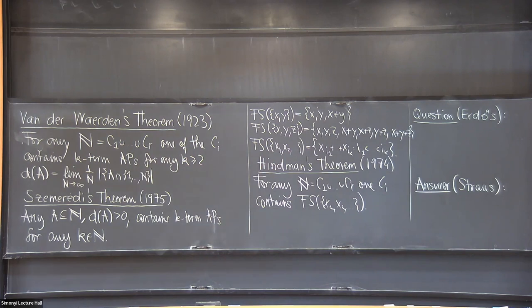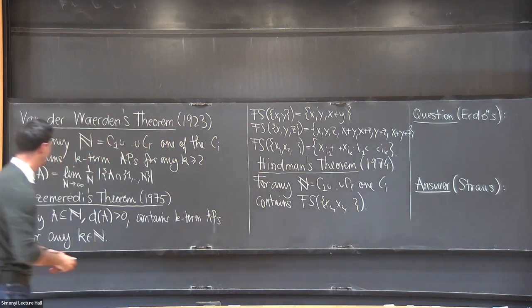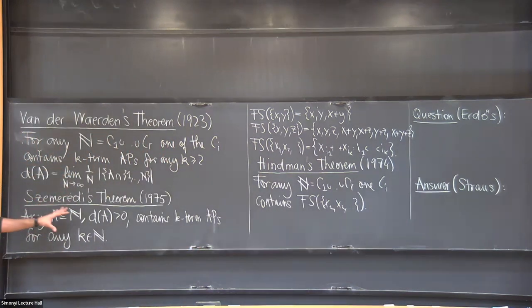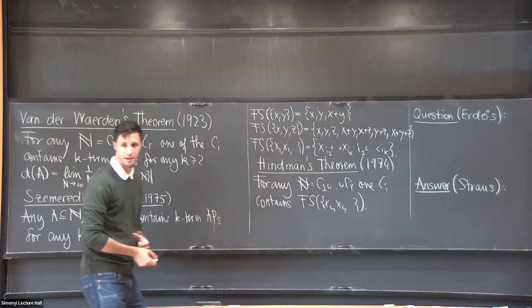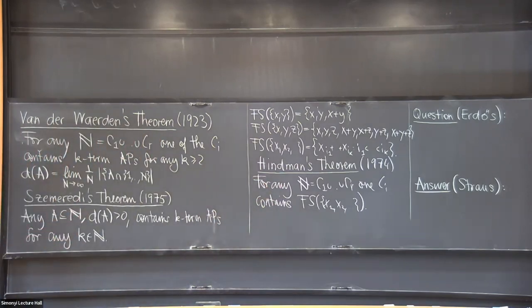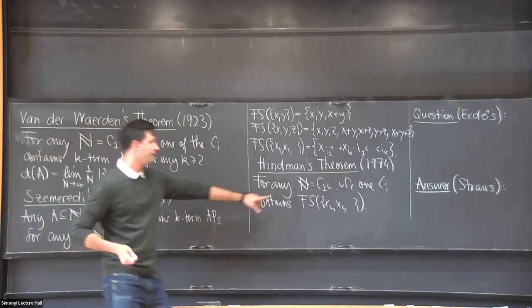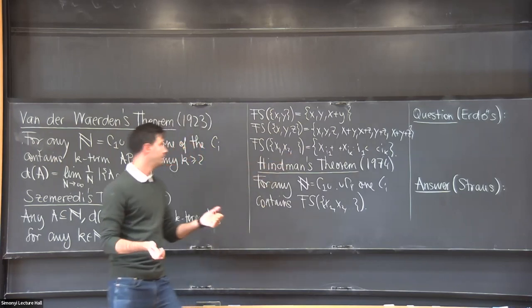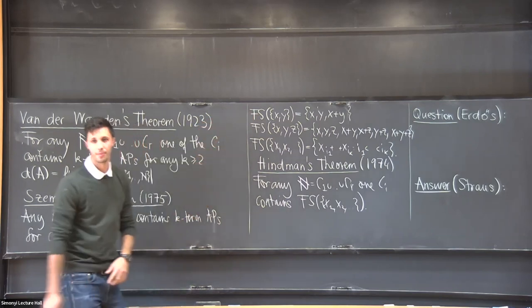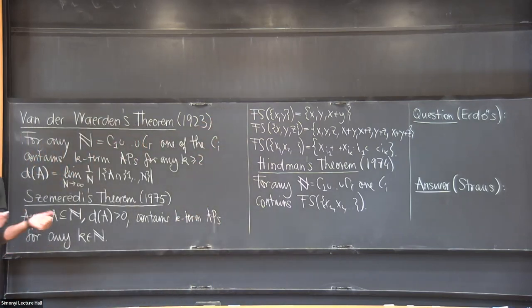And now we come to this sum-set conjecture of Erdős, because Erdős observed that van der Waerden's theorem generalizes so nicely to a density version. So it's very natural to ask: is there a density version of Hindman's theorem? Well, the first observation you have to make is you cannot just ask for a set of positive density to contain a creature like that, because you can just take the odd numbers and the odd numbers will not even contain this one here. But all you need to do is you need to shift the odd numbers by one, and then all of a sudden you're good.